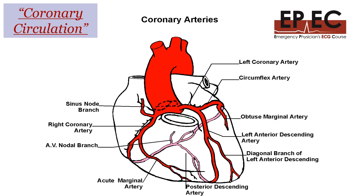Let's start with some basics on coronary circulation. This is our heart, and the coronaries are one of the first branches that come out of the aorta. We can see here that this is the right coronary coming out of the root of the aorta, and this is the left main coronary coming from the other side.